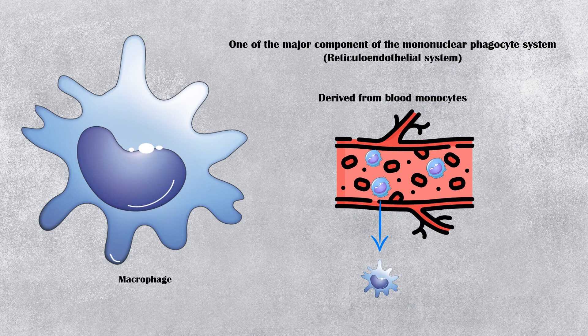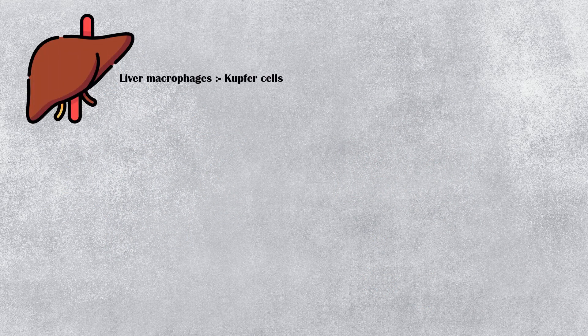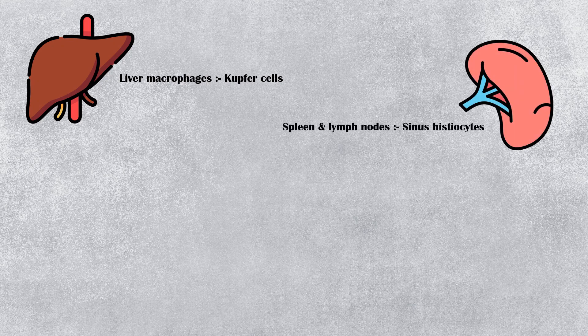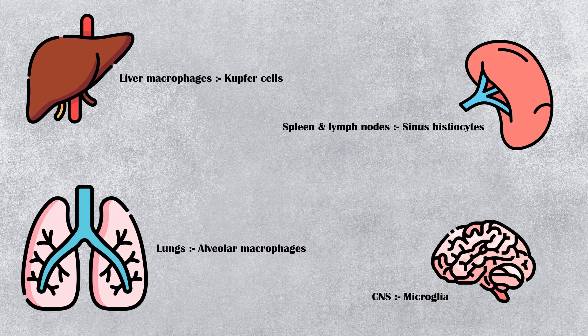This transformation is mediated by various chemicals, including adhesion molecules and cytokines. Macrophages found in different tissues are given different names. For example, liver macrophages are called Kupffer cells. Macrophages in the spleen and lymph nodes are called sinus histiocytes. In the lungs, we have alveolar macrophages. And in the brain, we have microglia.